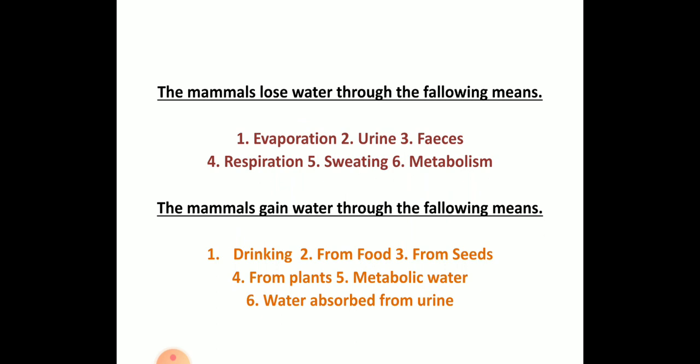Water is gained by drinking, by food, by metabolic water, and water absorbed from the urine. Inside the PCT — the proximal convoluted tubule, a section of the nephron — the water will be reabsorbed. These are the two means by which water is lost and water is gained.